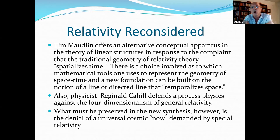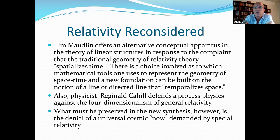It was Tim Maudlin who offered this alternative conceptual apparatus in the theory of linear structures in response to the complaint that the traditional geometry of relativity theory spatializes time. There is a choice involved as to which mathematical tools one uses to represent the geometry of space-time, and a new foundation can be built on the notion of a line or a directed line that temporalizes space. Okay, so instead of spatializing time, we have a slight modification here of temporalizing space. Reginald Cahill also defends process physics against the four-dimensionalism of general relativity, but what must be preserved in this new synthesis is a denial of the universal cosmic now demanded by special relativity.